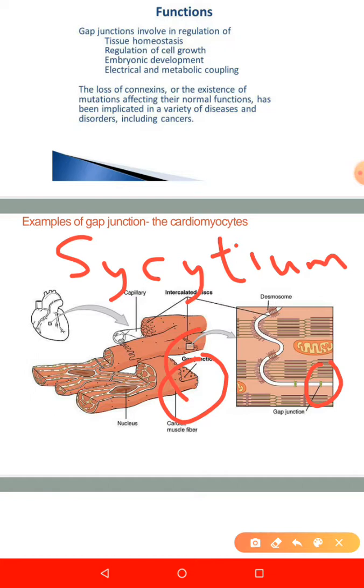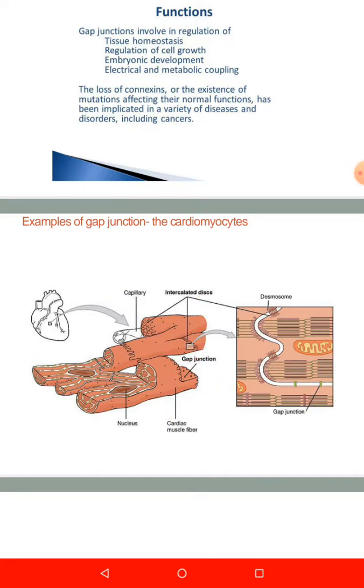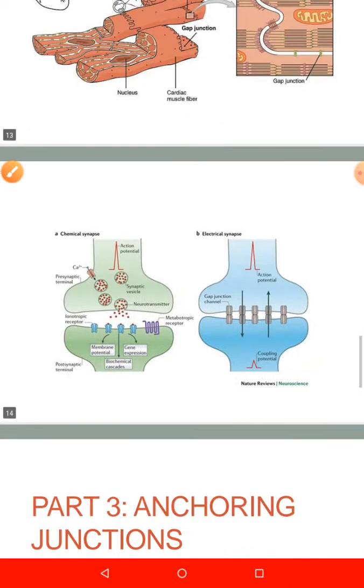The other definition of a syncytium is cytoplasmic continuity. So the gap junctions allows continuation of the cytoplasm. Apart from the heart, we have a gap junction in the intestines, the epithelial lining, and many others.